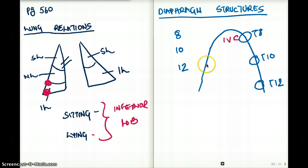At the level of T10, we have esophagus and vagus coming out at the level of T10.